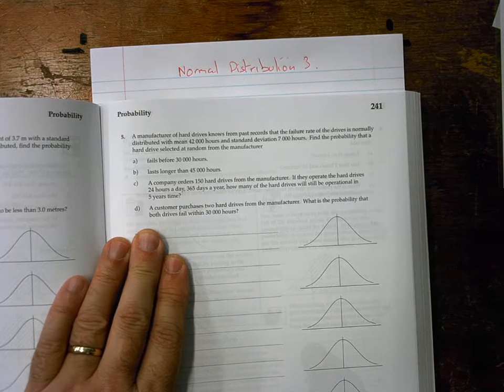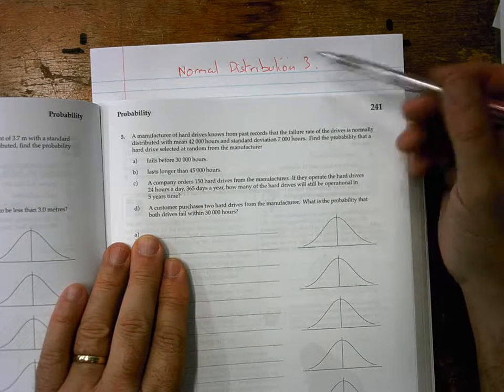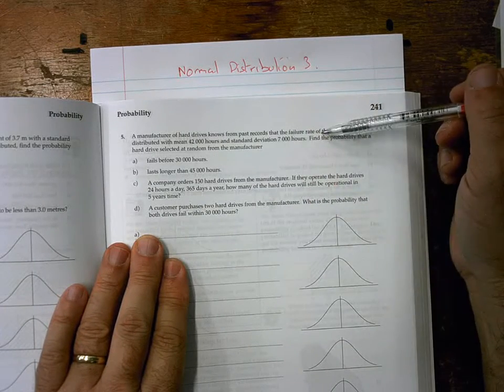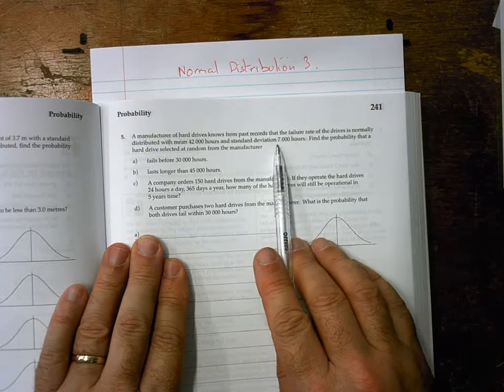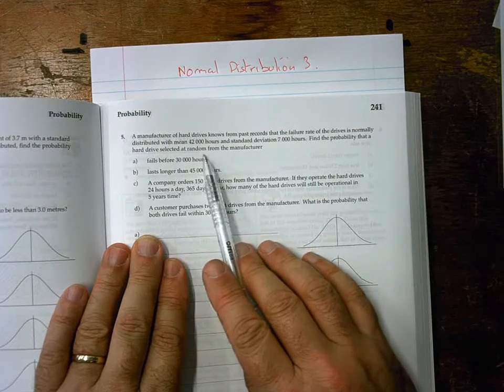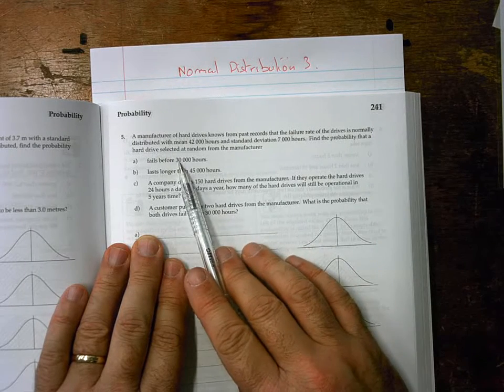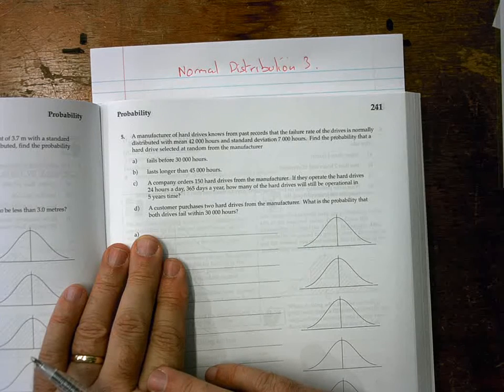Okay, so this is video number three in the normal distribution stuff, the third of six. We've got our question: the mean is 42,000 hours, the standard deviation is 7,000 hours. Find the probability that a hard drive selected at random fails before 30,000 hours. This all seems very complicated, but isn't.